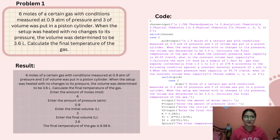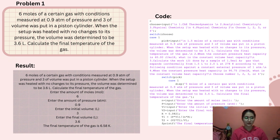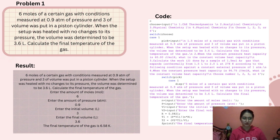After you enter the code, you input: the amount of moles, which is 6; the amount of pressure, which is 0.9; the initial volume, which is 3; and the final volume, which is 3.6. The final temperature of the gas is 6.58 Kelvin.